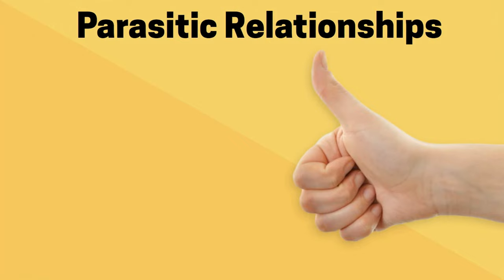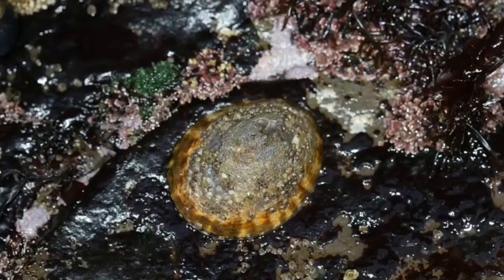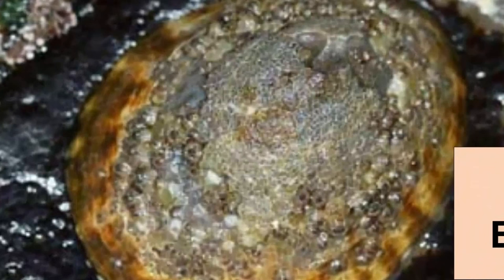Some organisms live in very close, symbiotic relationships with each other, which means one or both rely on the other for their survival. One type of symbiosis is called Commensalism, in which one organism benefits and the other isn't harmed or helped. This owl limpet is being used by tiny buckshot barnacles as a substrate on which to grow. As the owl limpet moves over the rock, the barnacles are carried through the water column, giving them greater access to food.